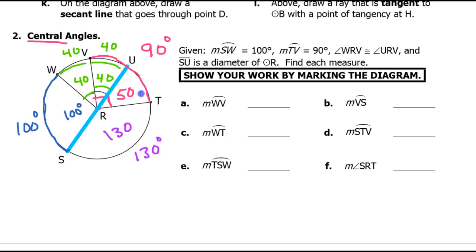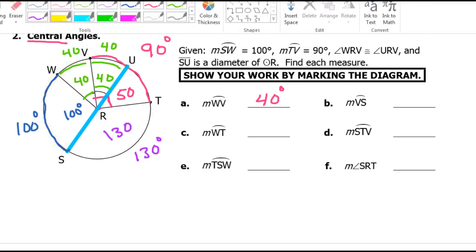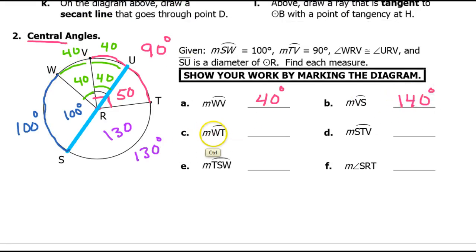Now we have enough information to answer any question. The measure of arc WV is 40. Arc VS goes from here to here — that's 140. Arc WT goes from here to here — that's 80 plus 50, which is 130.